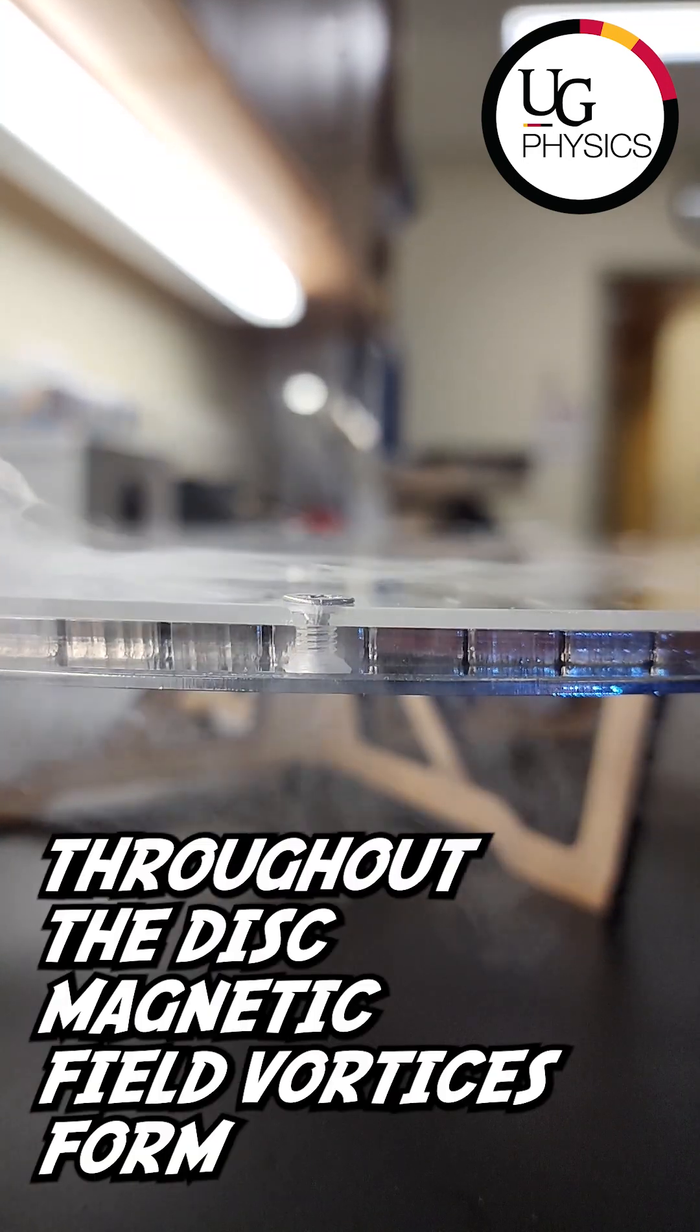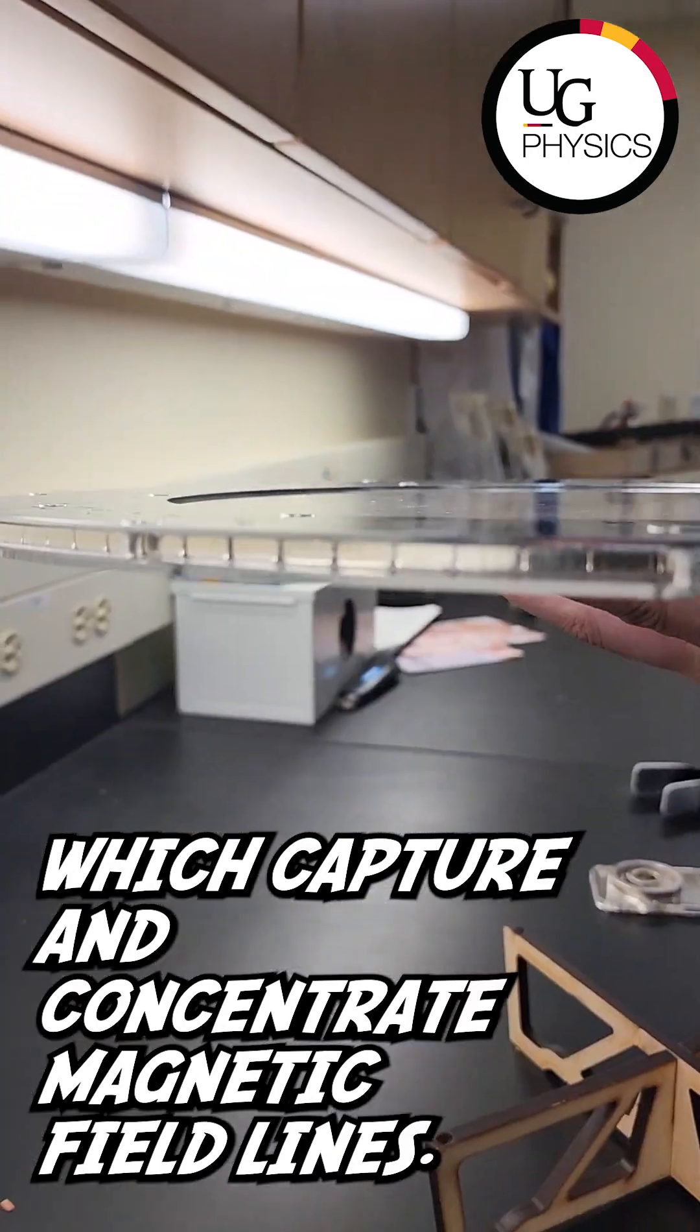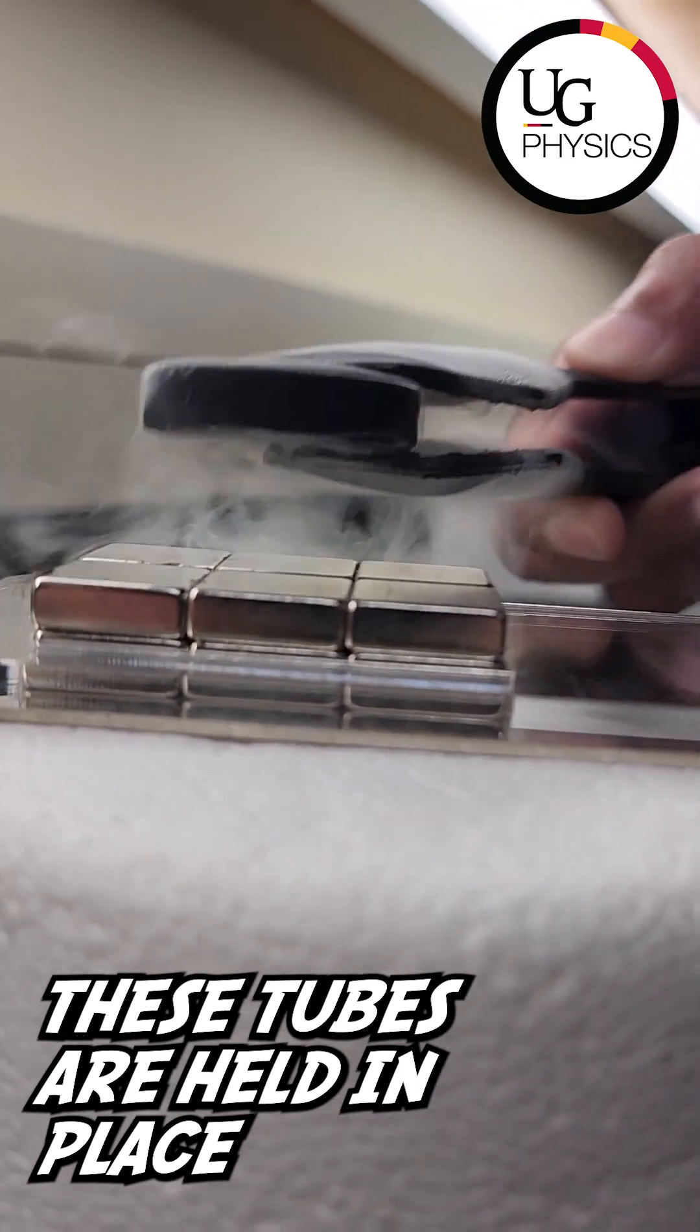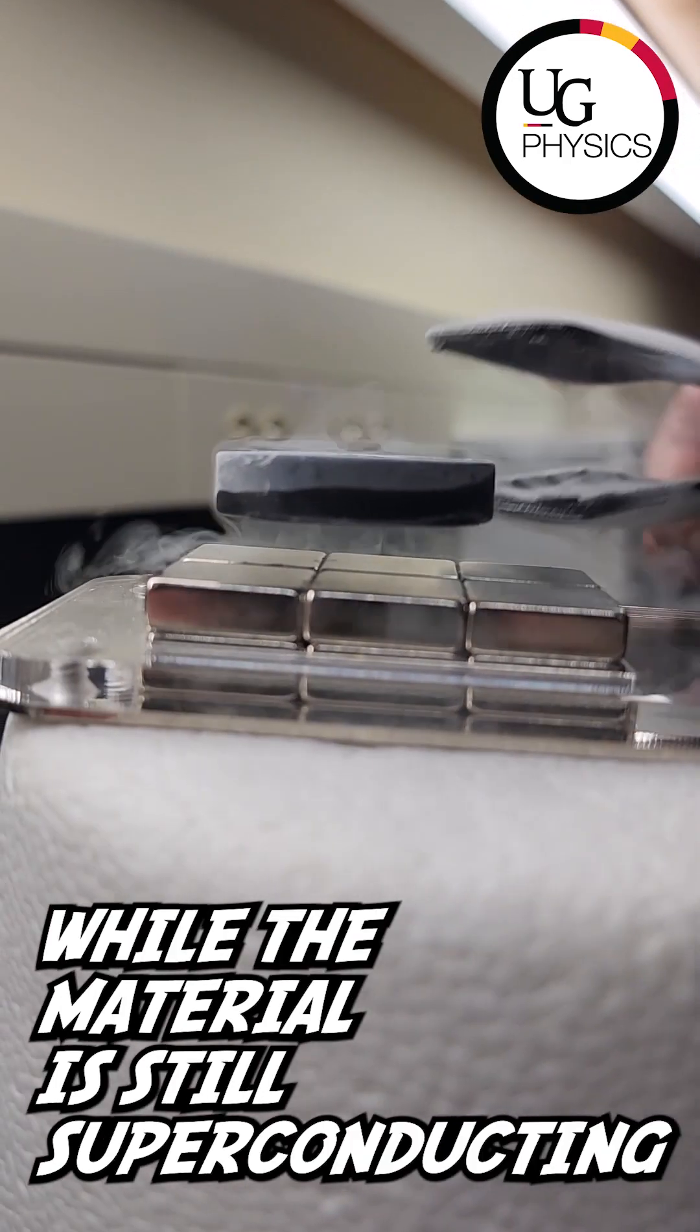Throughout the disc, magnetic field vortices form which capture and concentrate magnetic field lines. These are called flux tubes. These tubes are held in place while the material is still a superconductor.